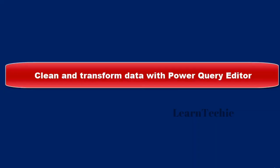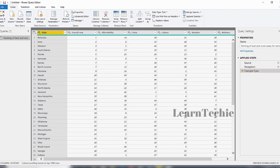Hello and welcome to this video. In the previous video, we were able to connect to a data source from the web using Microsoft Power BI Desktop. In this video, I want to focus on cleaning that data and transforming it using the Power Query Editor. Any modifications you make to the original data source can be regarded as transforming or shaping the data. We connected to the data source and clicked the Edit button to make changes.